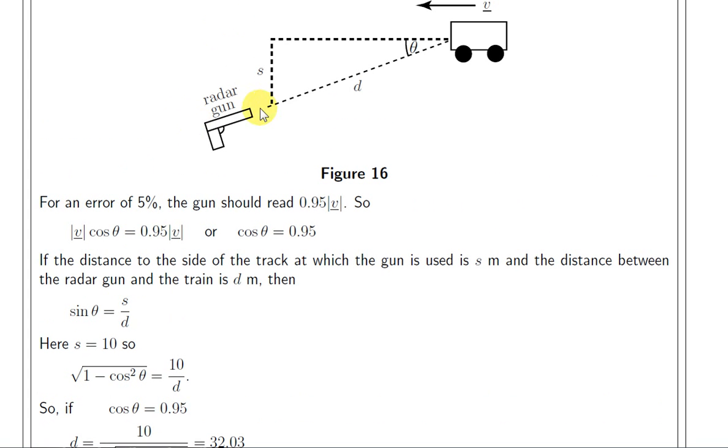So, the angle between this line and the direction of the vehicle will be decreasing to 0. So, the percentage error in the reading will decrease, will be less than 5%.